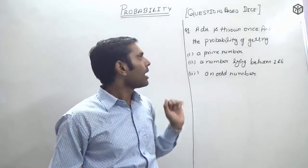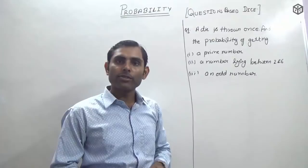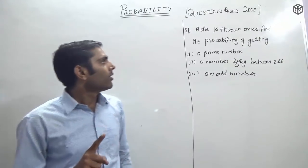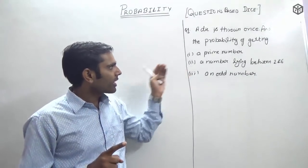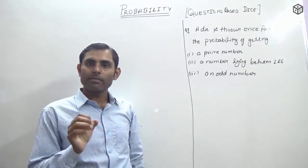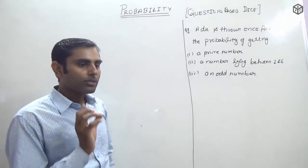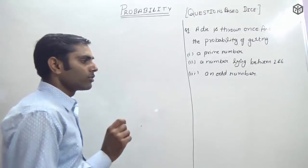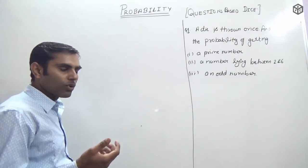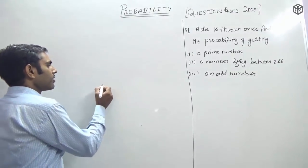You have to find the probability of getting a prime number. First of all, you should know about a die. In the total counting, if you play Ludo, you have to find the numbering or points.